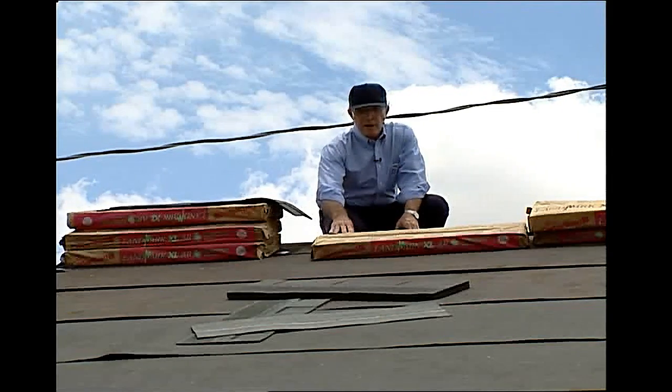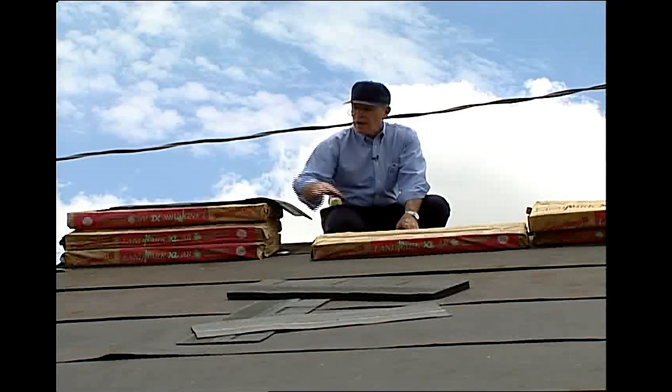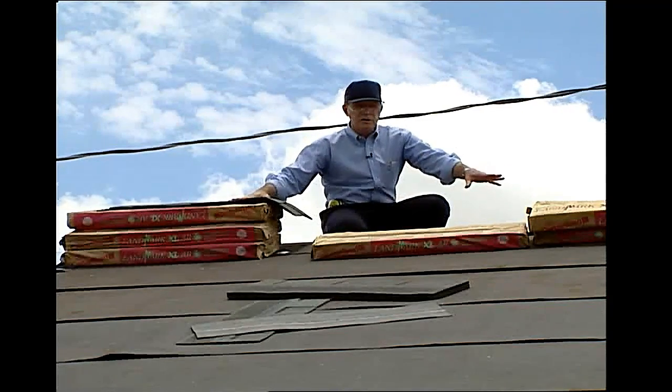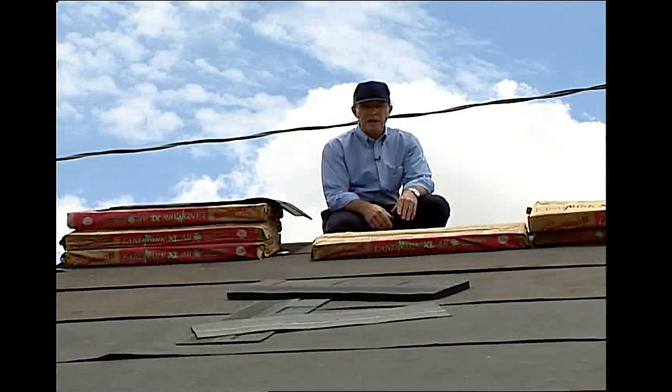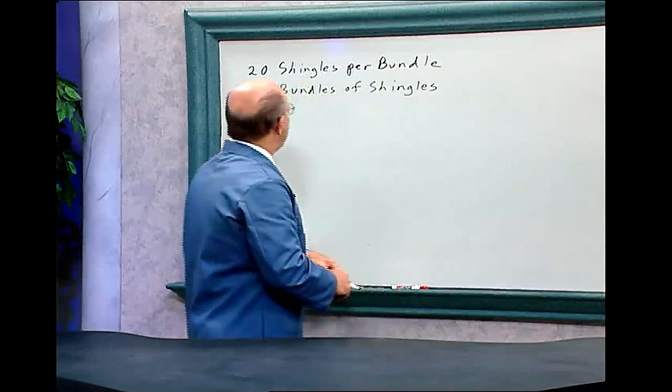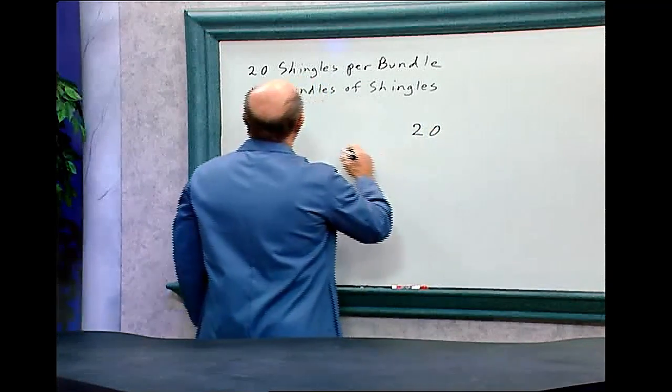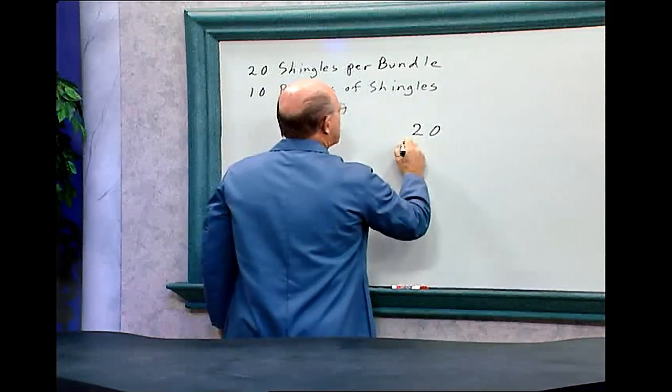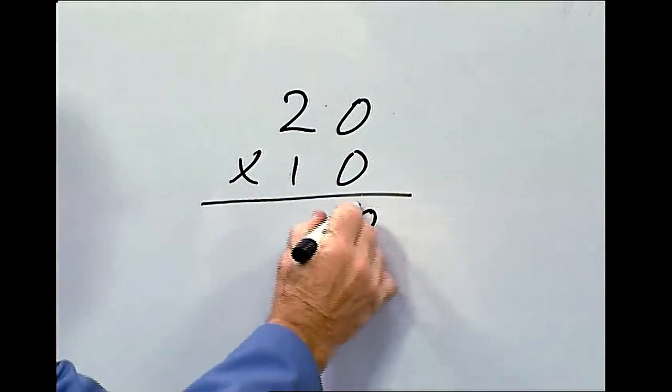Each bundle of shingles, there are 20 shingles in each bundle, and there are 10 bundles. How many shingles are there in these 10 bundles? Let's do the math. There are 20 shingles per bundle, and there are 10 bundles of shingles, so we're going to multiply that by 10.